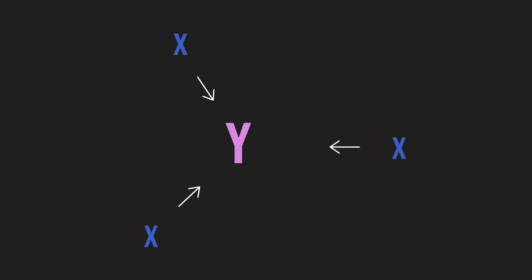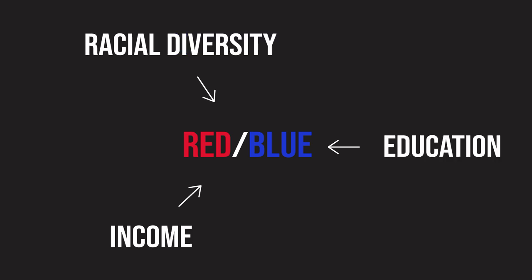Let's take an example dataset. We have the y variable, whether a state is red or blue, and we have three x variables: education, income, and racial diversity.